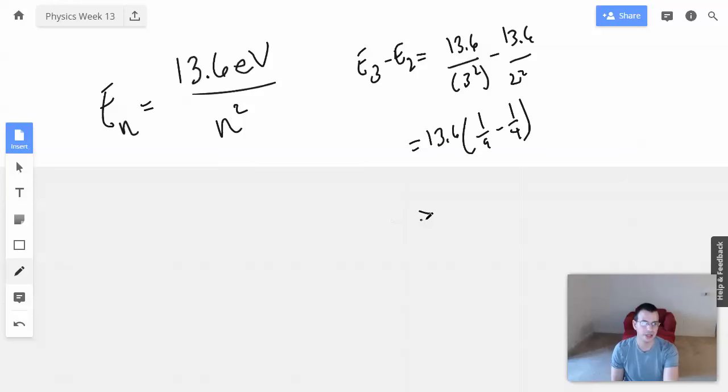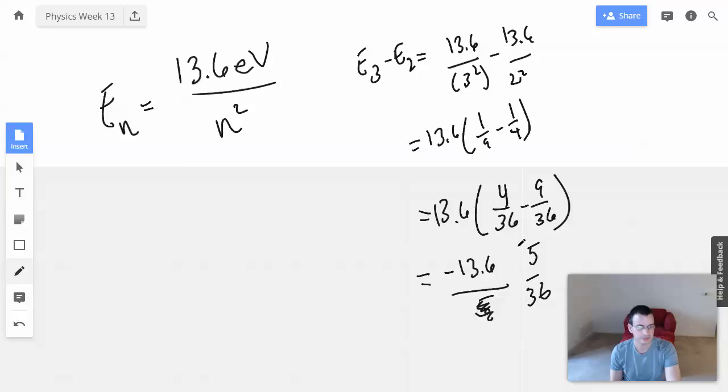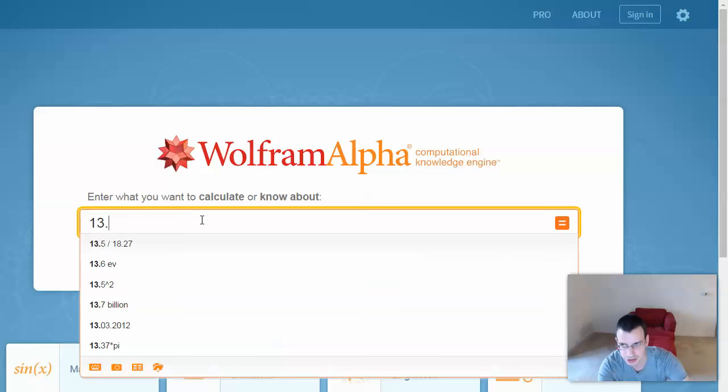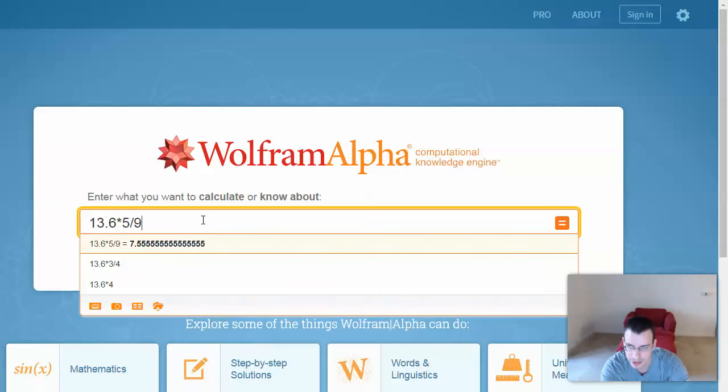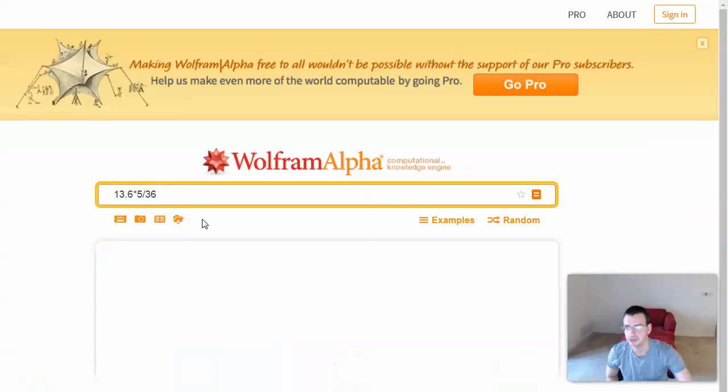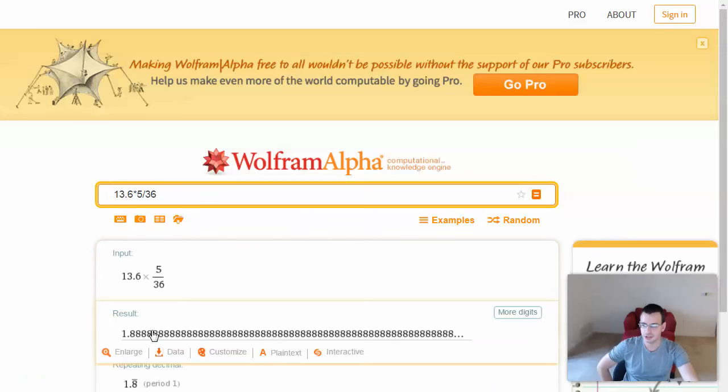Simplifying this out, we have 13.6. I'm going to call this 4 over 36 minus 9 over 36, which gives us negative. So, we have 13.6. We're going to negative 5 over 36. I'm going to do 13.6 times 5 divided by 36. And that gives us 1.9.